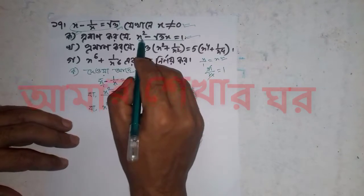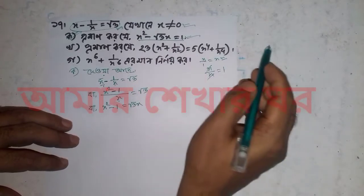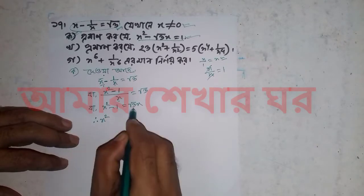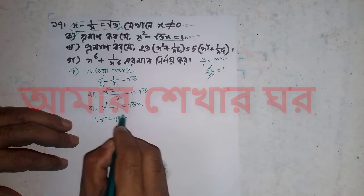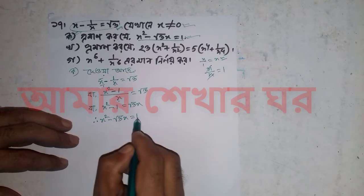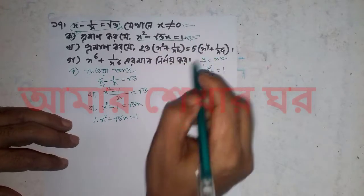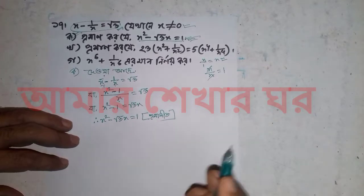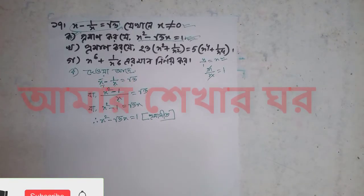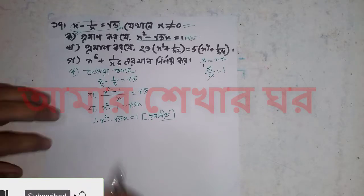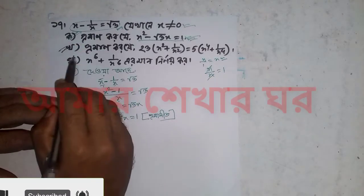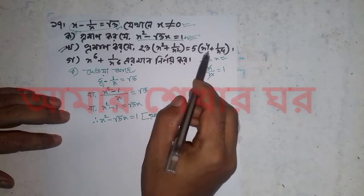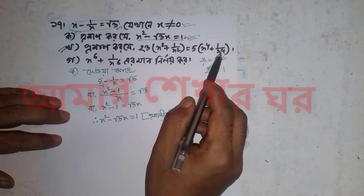We have x squared minus 3x equal to 1. The problem number 23: x squared plus 1 by x squared is equal to 5. Find x to the power 4 plus 1 by x to the power 4.